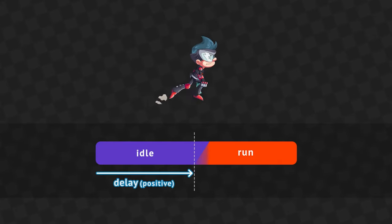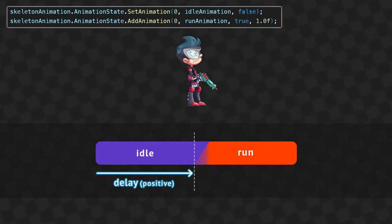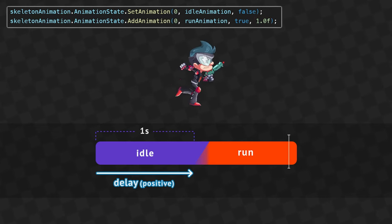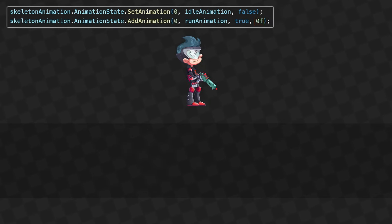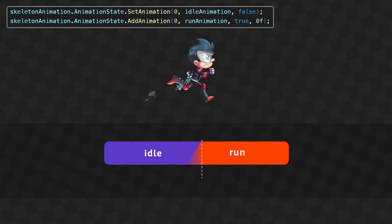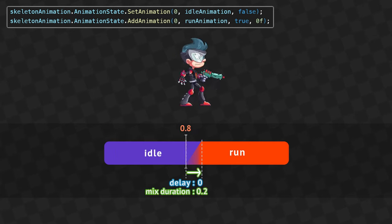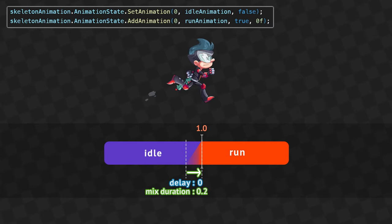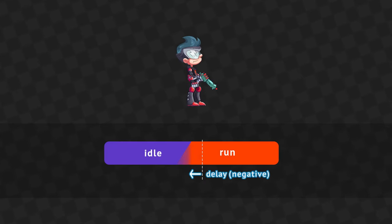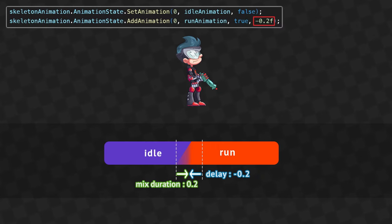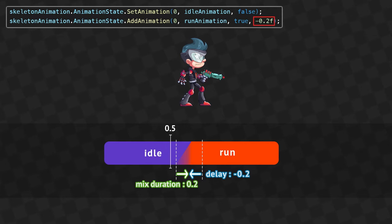When the delay is positive, it's the time from the start of the previous animation to when the queued animation starts. For example, if you set an idle animation then add a run animation with a delay of one second, idle will play for one second, then be replaced by run. When the delay is zero (most common), the queued animation will start mixing in so that it completes the mix when the previous animation finishes. For example, if your idle animation has a duration of one second, adding a run animation with a delay of zero and a mix duration of 0.2 will start mixing in run at 0.8 seconds. When the delay is negative, the start time is moved back by that amount — for example, a delay of -0.2 would start mixing at 0.6 seconds instead of 0.8.